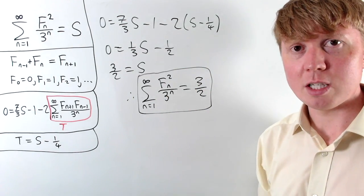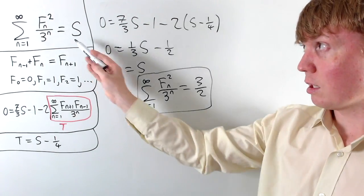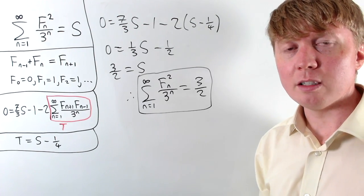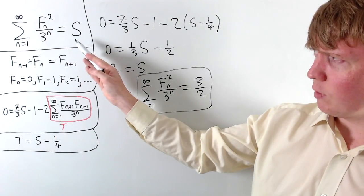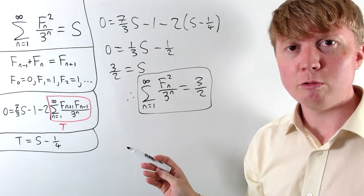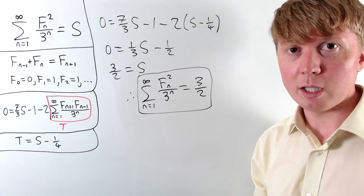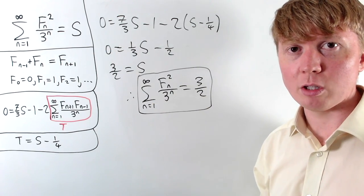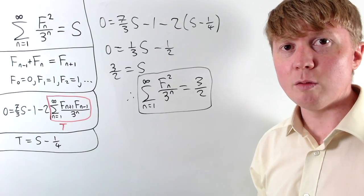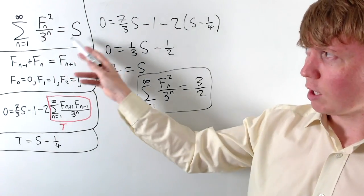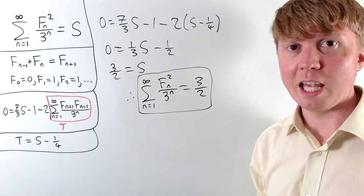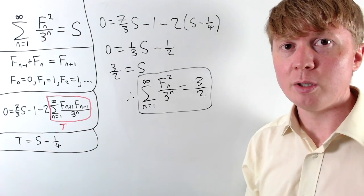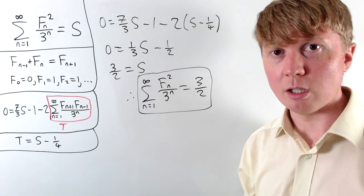Bear in mind that our argument isn't entirely complete because we haven't shown this series is convergent — you would want to show that to be entirely rigorous. This is really important: when planning this video I originally tried this problem with 2 to the n instead of 3 to the n, and kept getting weird negative answers for a sum of positive terms. The series with 2 to the n isn't actually convergent, so we can't split it into multiple series as we did here.